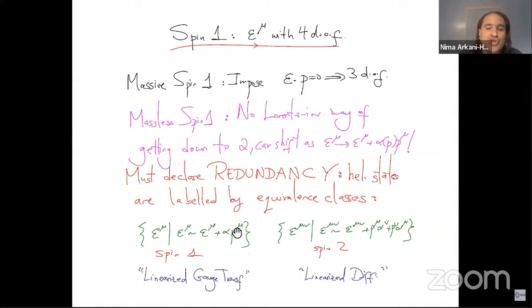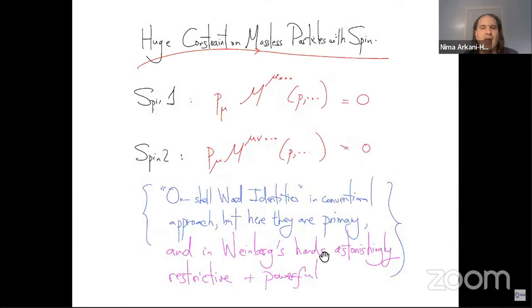This is what the shift looks like for spin one. This is what it looks like for spin two. Of course, we can recognize these as linearized gauge transformations or linearized diffeomorphisms. But from this point of view, they're just sort of forced on us simply by trying to describe the correct number of degrees of freedom.